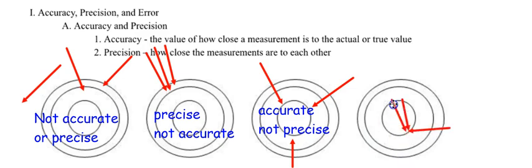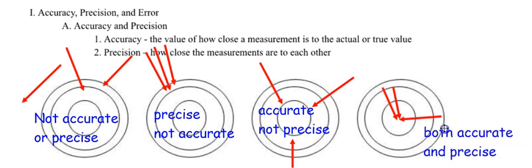Over here, I have three arrows — they all hit the bullseye. I'm kind of like a Robin Hood at this point, and they're all together. So how would you describe this? They are both accurate and precise. This is really our goal: as long as your equipment is working well and you are very careful, you should be both accurate and precise.